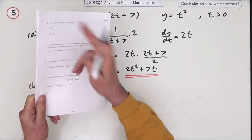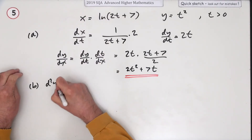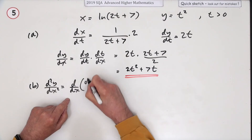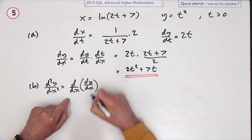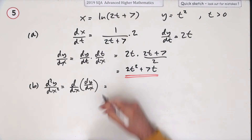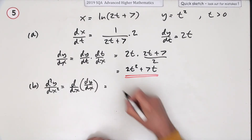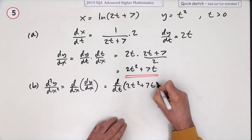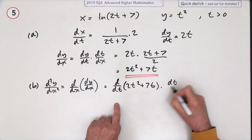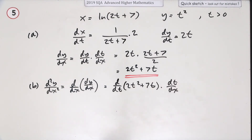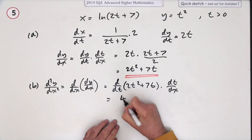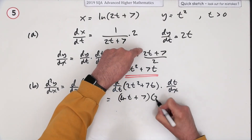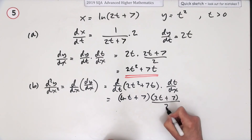Part b asks for the second derivative. To find d²y/dx², you differentiate dy/dx a second time. Since it's parametric, it's d/dt of (2t² + 7t) times dt/dx. That gives (4t + 7), and dt/dx is again (2t + 7) all over 2.